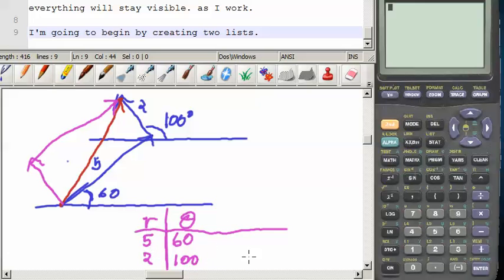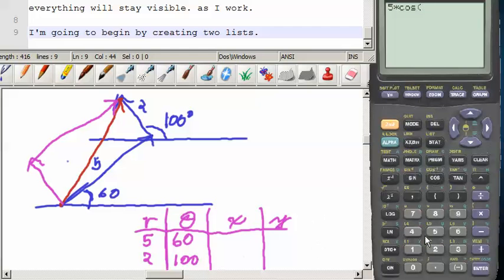Those are our radiuses and angles. Then what I'm going to do is come over here and find out what x and y are. And so x is going to be 5 times cosine of 60. And that comes out to be negative 4.76. y is going to be 5 times sine of 60. And that comes out to be negative 1.54.